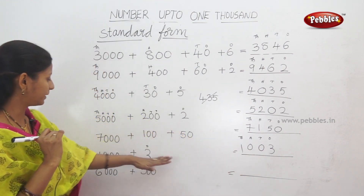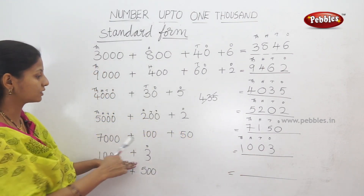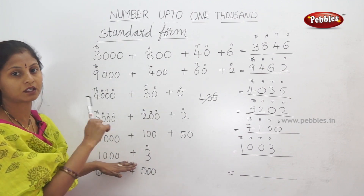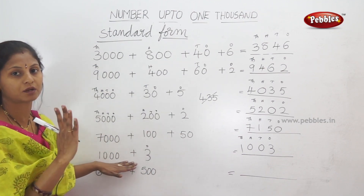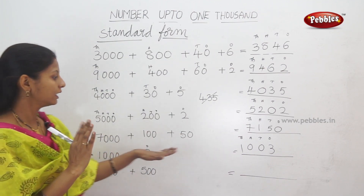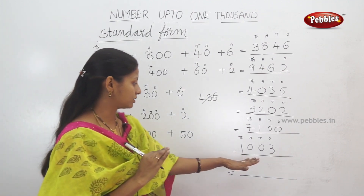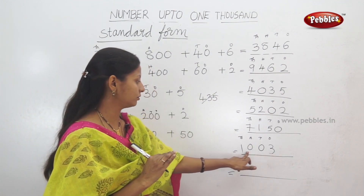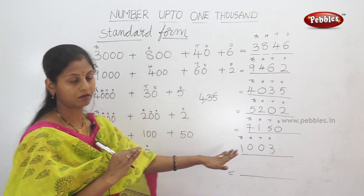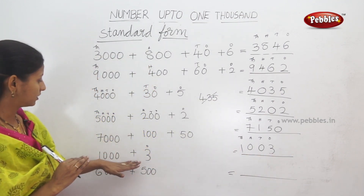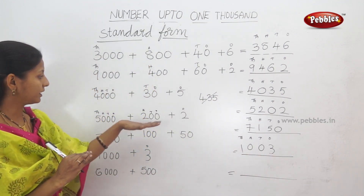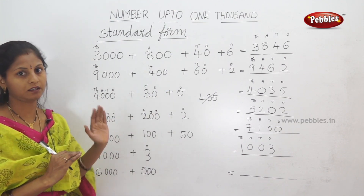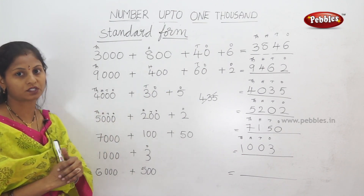So, here we have hundreds and tens — so what place do we have zero? Hundreds place is zero. Tens place is zero. So, 1000 plus 3 — standard form: one thousand three. So, we have two place values; the answer is four digits. Here we have four digits: 1, 2, 3, 4.